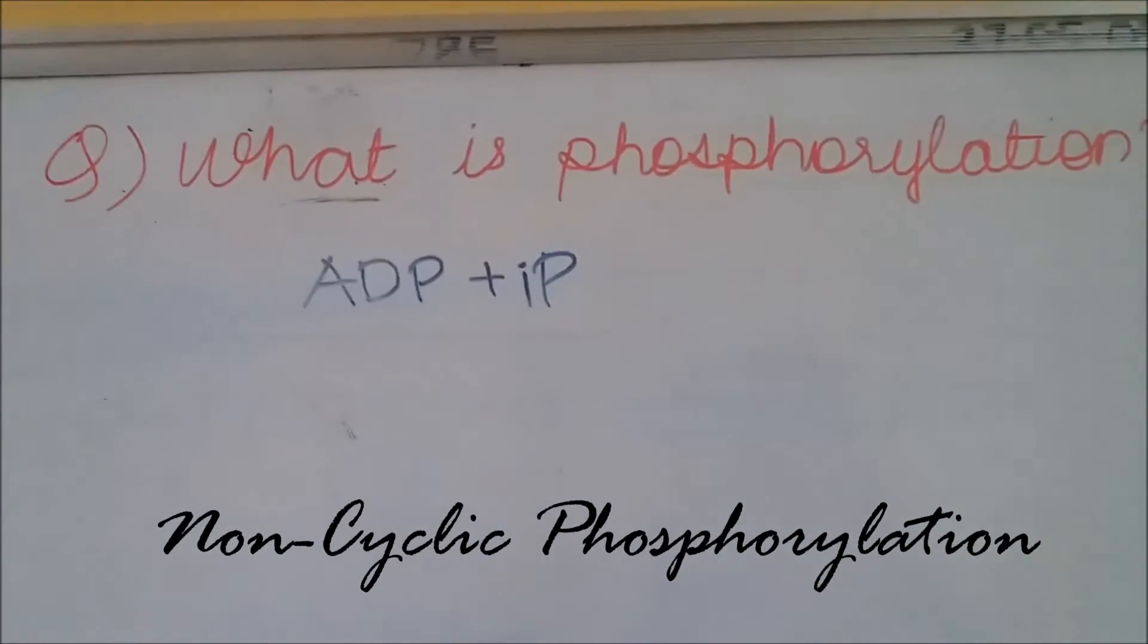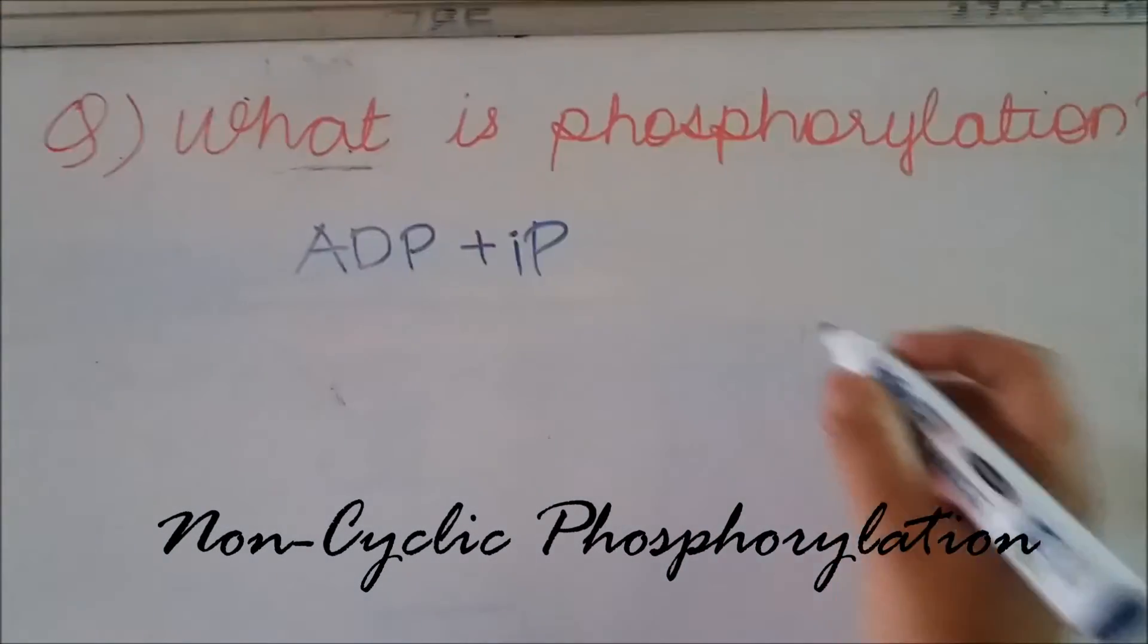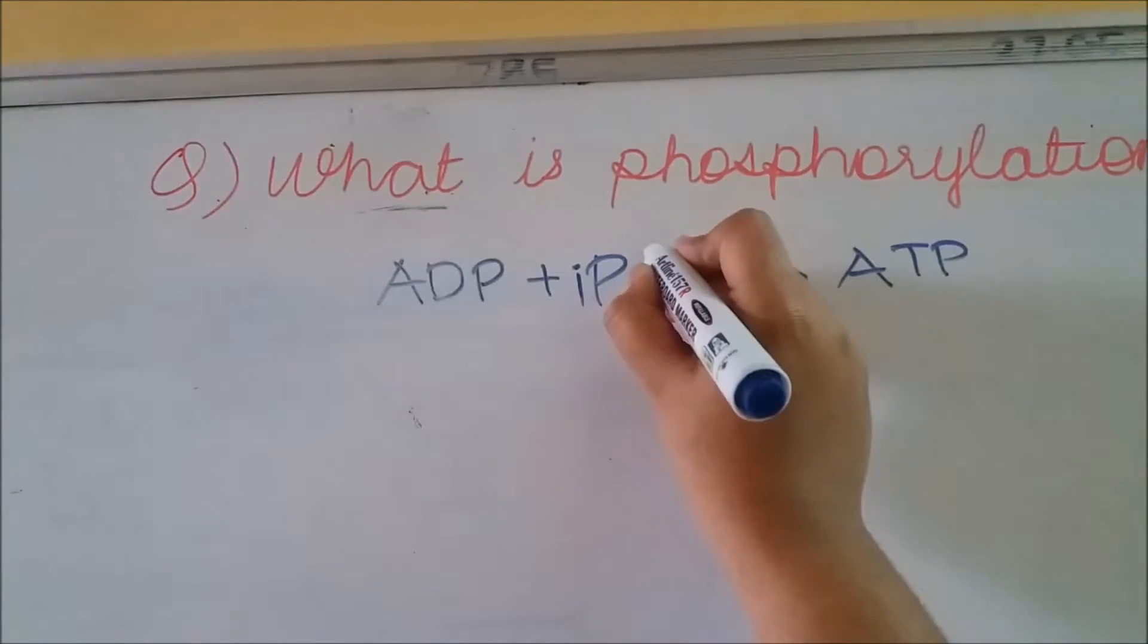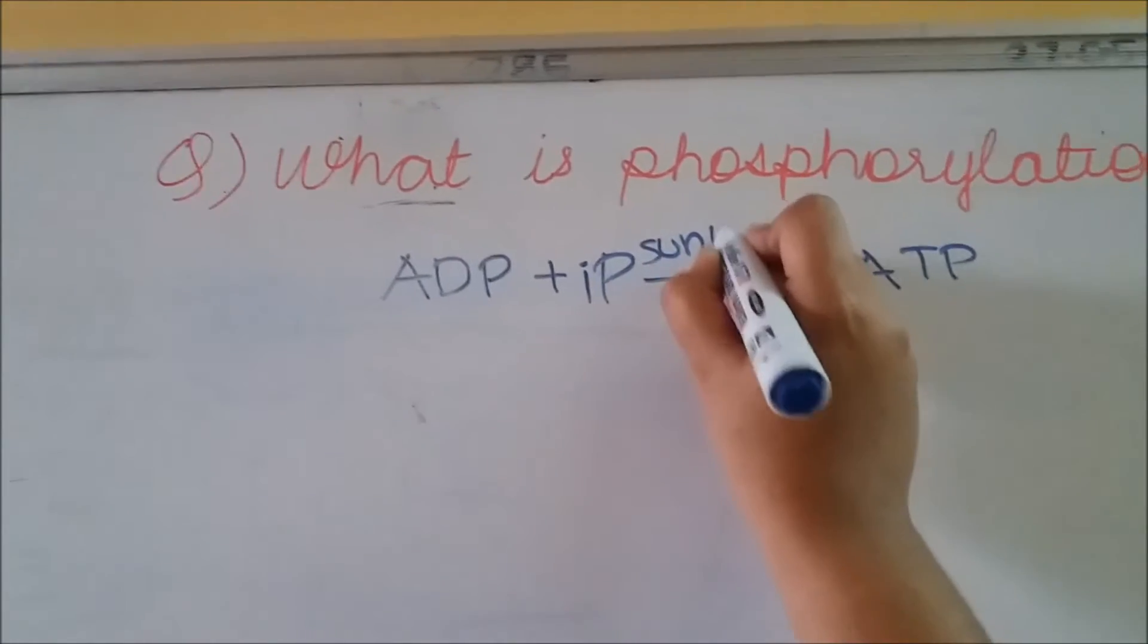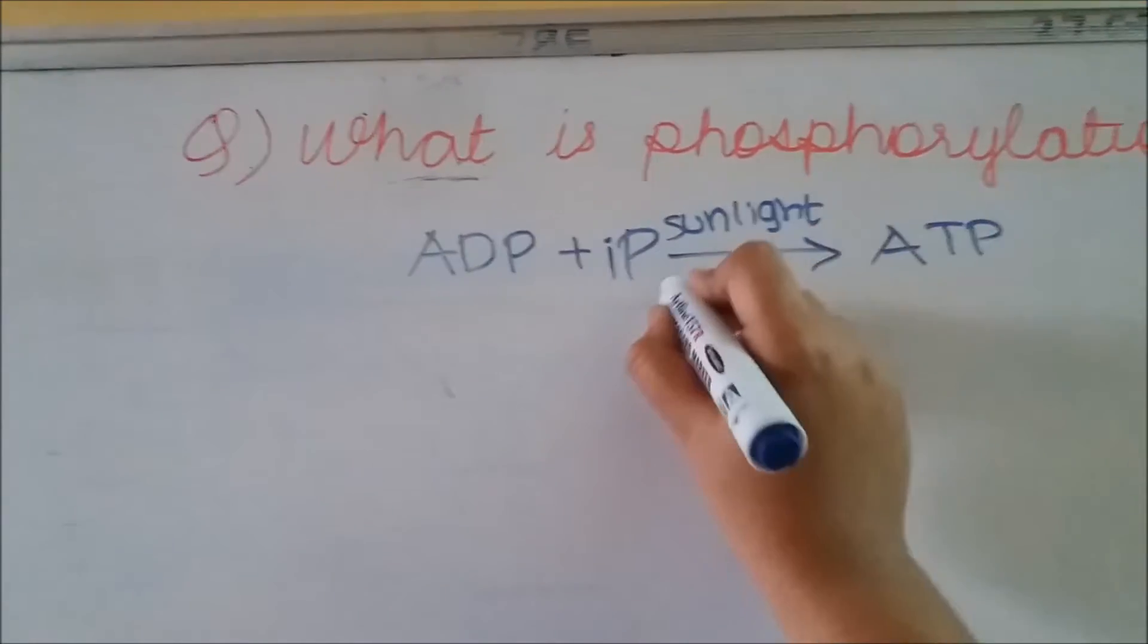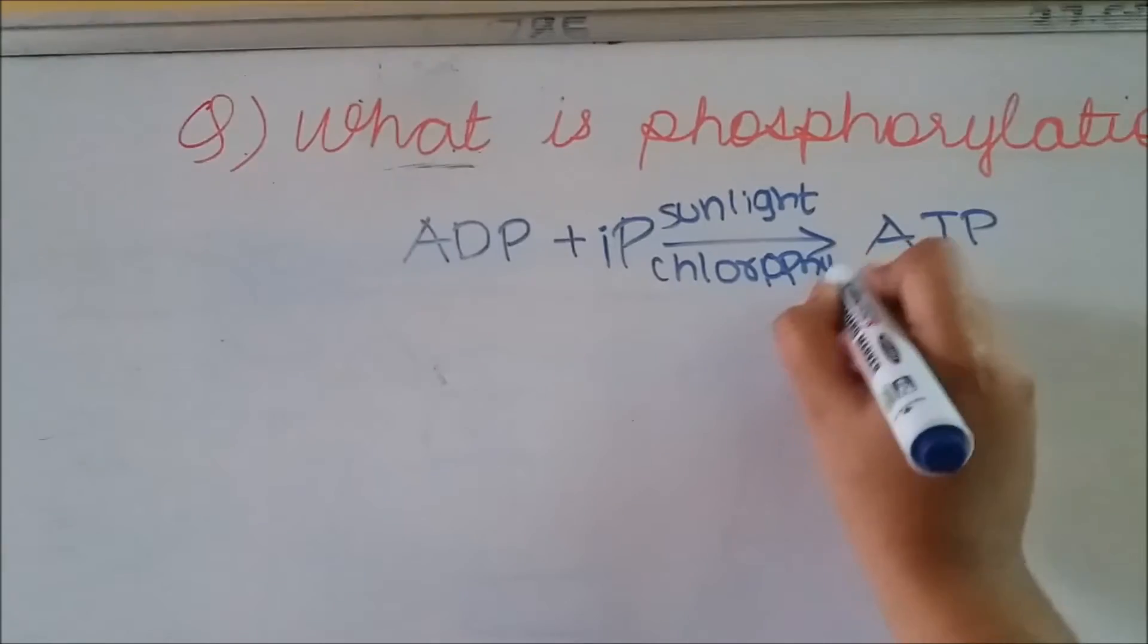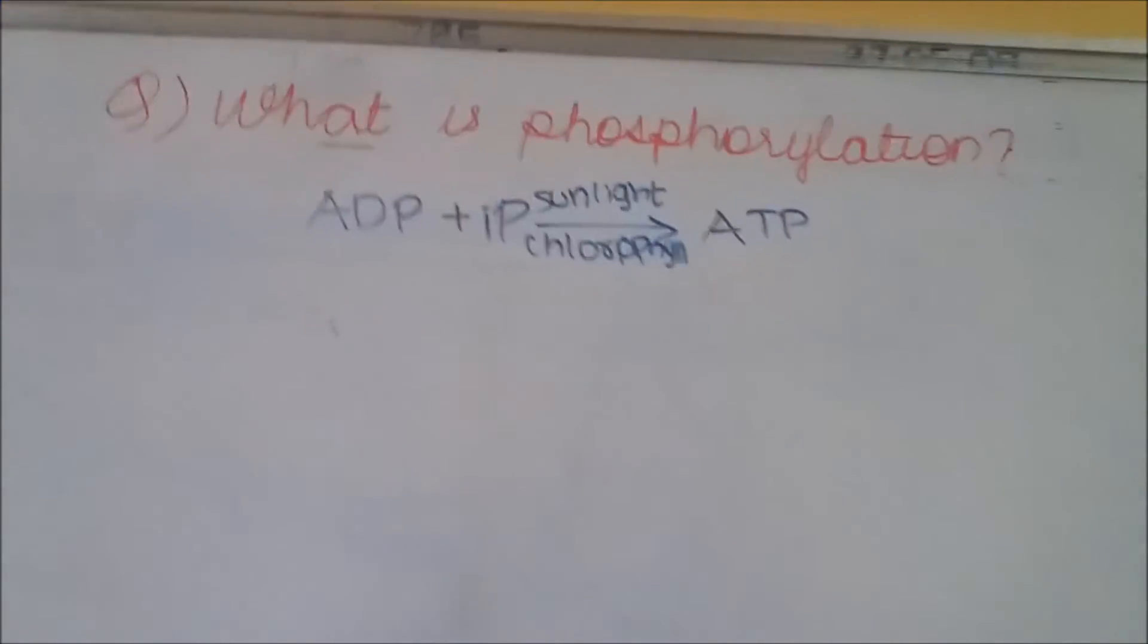In organic phosphate group under sunlight and chlorophyll, we are going to see non-cyclic phosphorylation first. So let's get started.